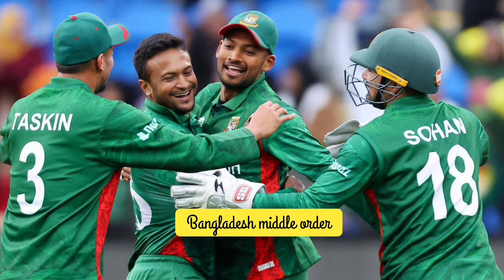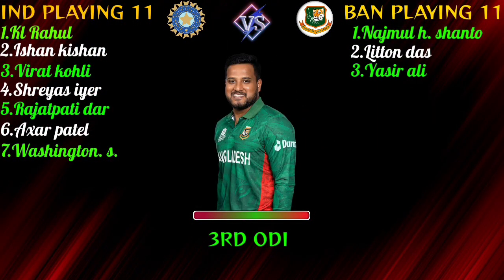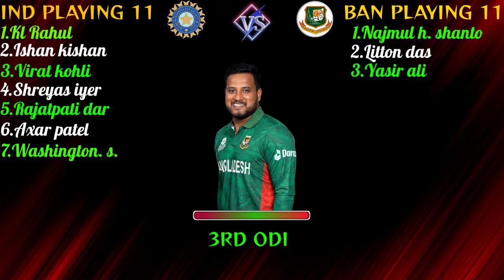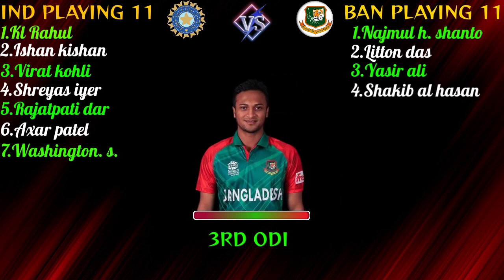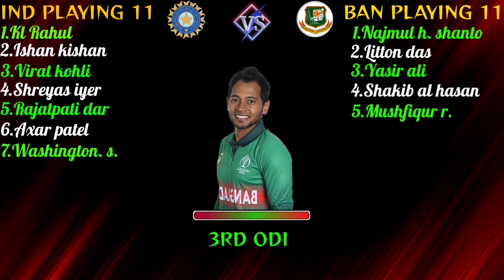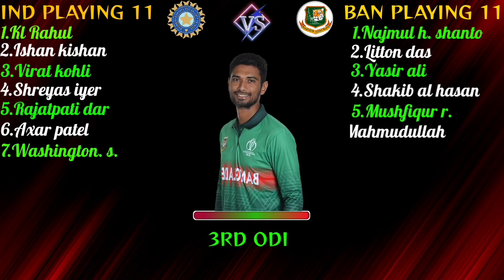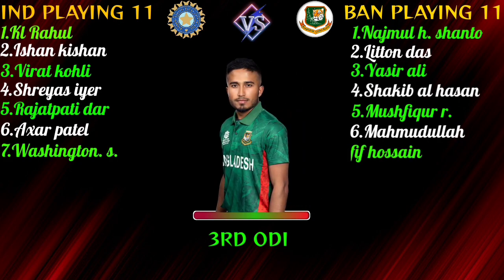Bangladesh team middle order: No. 3 Yashir Ali, Right-hand Batsman. No. 4 Sakibal Hasan, Batting All-Rounder. No. 5 Muspikur Rahim, Wicketkeeper Batsman. No. 6 Mahmood Dilar Yad, Batting All-Rounder. No. 7 Afif Hasan, Batting All-Rounder.